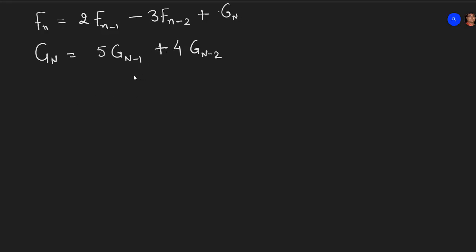In such cases we come up with a matrix which will have four terms: two terms for Fn and two terms for Gn. And then we will go and break it down.